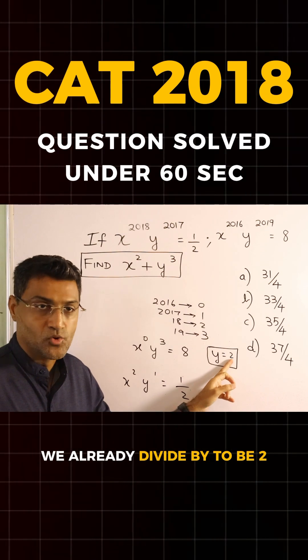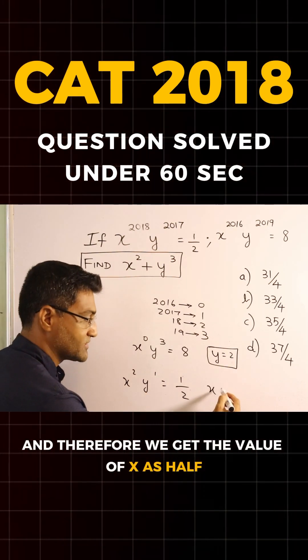We already derived y to be 2, which we can put here, and therefore we get the value of x as half.